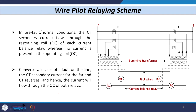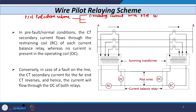With this discussion, let us start our first discussion on pilot protection schemes. The pilot protection scheme is classified into three types: one is known as the circulating current wire pilot relaying scheme, the second is the opposed voltage wire pilot relaying scheme, and the third is the translate type of scheme. Let us discuss the first one — the circulating current wire pilot relaying scheme.